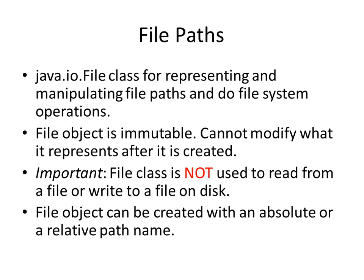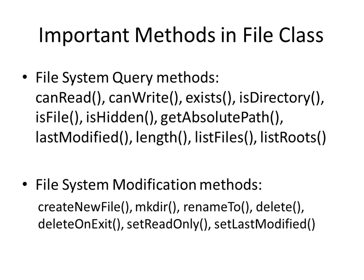There are two kinds of methods in the File class. The first type are query methods, which just query what's on the disk, and the second type are file system modification methods. Examples of query methods are: canRead — can you read from a file or not; canWrite — can you write to the file or not; exists — checks whether the file exists or not; isDirectory — checks whether the file path represents a directory or a file; and methods like getAbsolutePath, lastModified, length, list files in a directory, and list the root. Modification methods include creating a new file, deleting a file, making a directory, renaming a file, and setting last modified time.